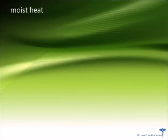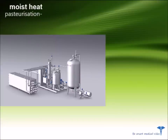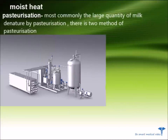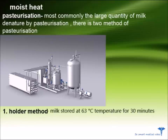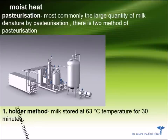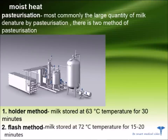Moist Heat. In moist heat we will start from pasteurization. Most commonly, large quantities of milk are treated by pasteurization. There are two methods of pasteurization. First, the holder method — in the holder method, milk is stored at 63 degrees Celsius temperature for 30 minutes. The second method is the flash method — in the flash method, milk is stored at 72 degrees Celsius temperature for 15 to 20 minutes.